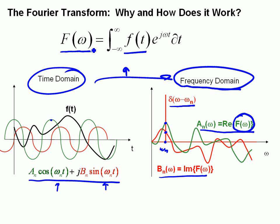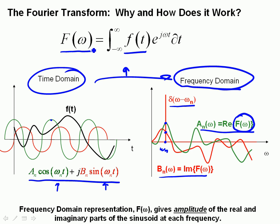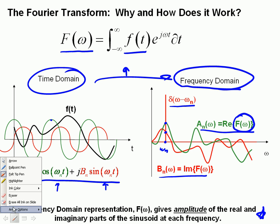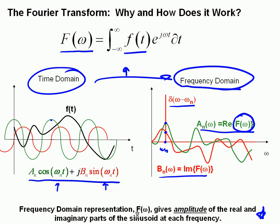To review, the important thing is a frequency domain representation. A frequency domain representation gives the amplitude of the real and imaginary parts of the sinusoids that you have to sum together to give the time domain signal at each frequency. So keep that in your head as we move forward.